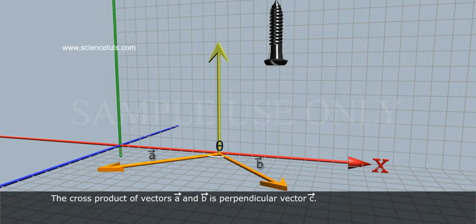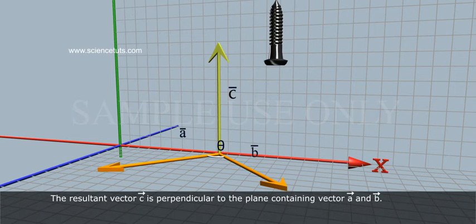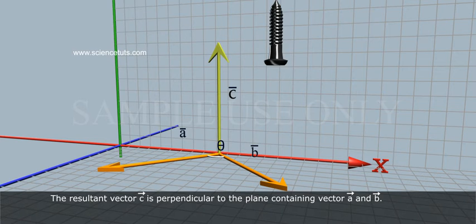The cross-product of vectors A and B is a perpendicular vector C. The resultant vector C is perpendicular to the plane containing vectors A and B.